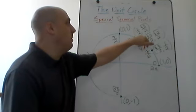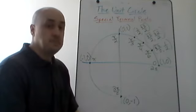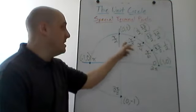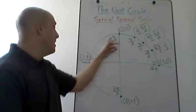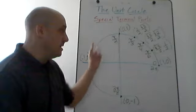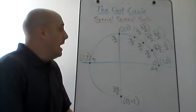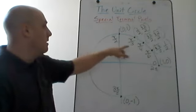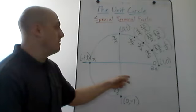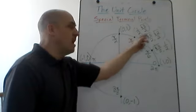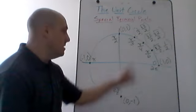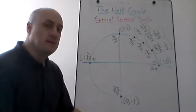For pi over 3, the terminal point is (1/2, √3/2). You need to know those terminal points for pi over 6, pi over 4, pi over 3, and also the other ones: pi over 2, pi, 3 pi over 2, and 2 pi. We can then use those to figure out terminal points for related points in each of the other three quadrants. When we switch quadrants, sometimes the x becomes negative, sometimes the y becomes negative — but the numbers are going to be the same.